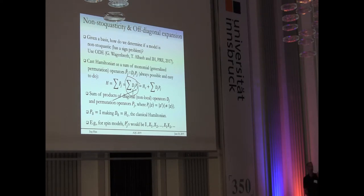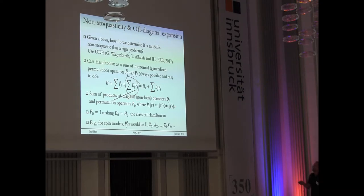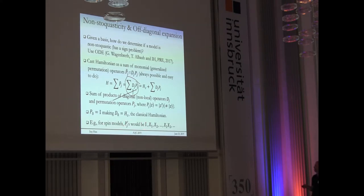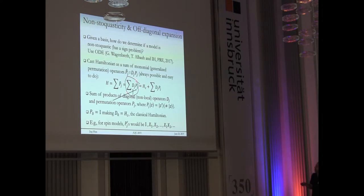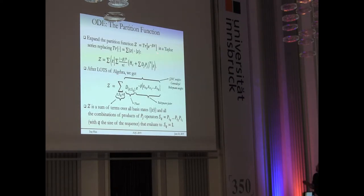The prescription is: write the Hamiltonian as a sum of products of diagonal Hamiltonians and permutation operators. Diagonal operators can be non-local, like an Ising term times a permutation. When a permutation operator acts on a basis state, it gives you another basis state. For spin models, permutation operators will be the identity and all the Pauli-X combinations. If you can write your Hamiltonian this way, then you plug it into the partition function.